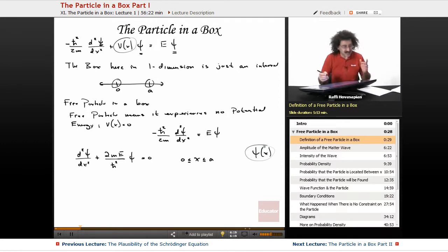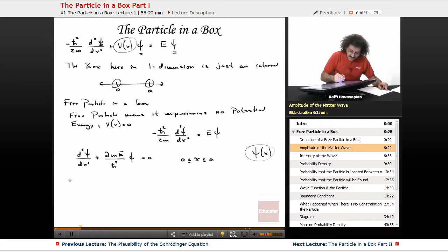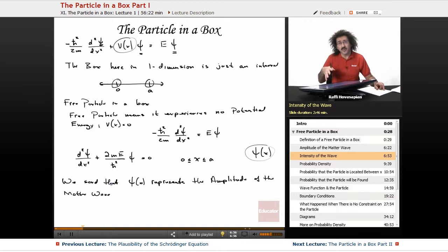Now the question is, how can we interpret psi? How do we interpret that? We said that the wave function represents the amplitude of the matter wave in a previous lesson. It represents the amplitude of a matter wave. Now in classical mechanics, when we square the amplitude of a wave, we get the intensity of that wave. So the square of the amplitude represents the intensity of the wave.